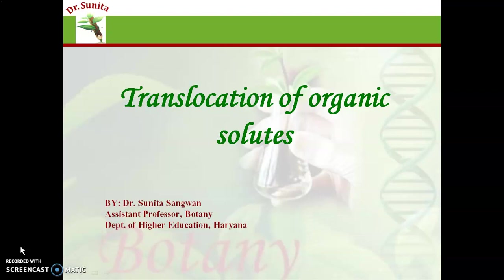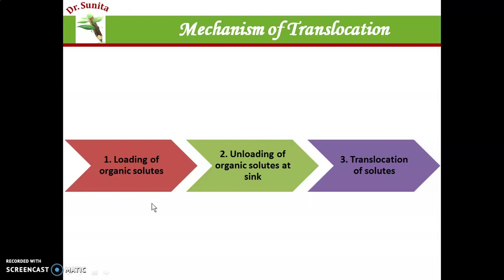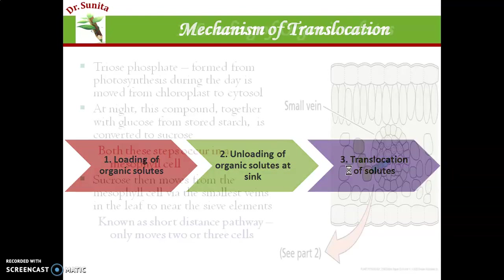In the previous class we discussed the theories of translocation of organic solutes. In continuation of this topic, in this class we discuss the mechanism of translocation of organic solutes. The most accepted theory is the Munch flow hypothesis, and the mechanism is based upon that theory. There are three steps of the mechanism of translocation: first is loading of organic solutes, second is unloading of organic solute at the sink, and third is translocation of solutes.